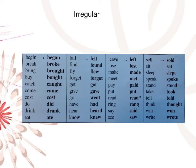Continuing irregular verbs: lose → lost, make → made, meet → met, pay → paid, put → put, read → read, ring → rang, say → said, see → saw, sell → sold, sit → sat, sleep → slept, speak → spoke, stand → stood, take → took, tell → told, think → thought, win → won, write → wrote.